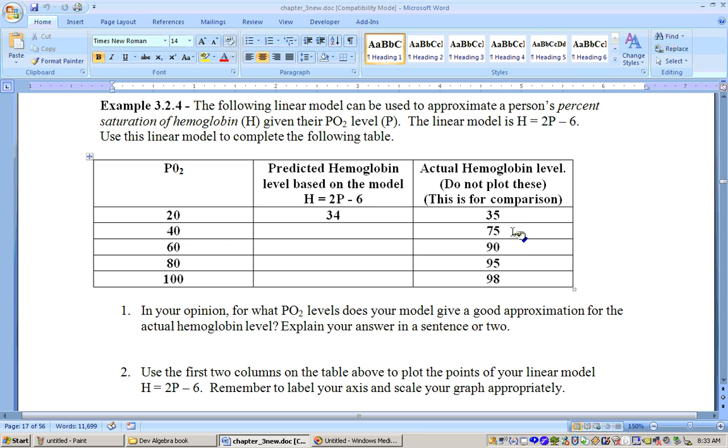Now, this is the actual hemoglobin level for these PO2 levels. And these predicted hemoglobin levels, based on this equation, won't be the exact values, but they should be close to that if it's a good model. And they're not always close. But, for example, to do this, we'll substitute whatever numbers they give you here to put in for x or P. So, substitute 20 in for P, and that would be 2 times 20 is 40. 40 minus 6 is 34. So, then we would plot the point 20, 34, and we would do the same for all these values.